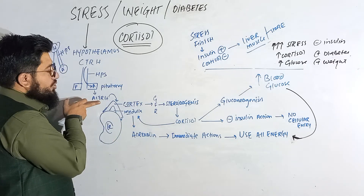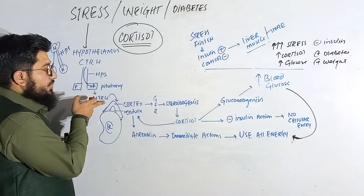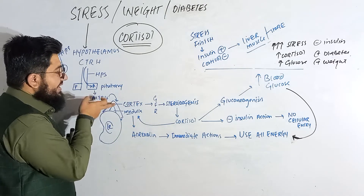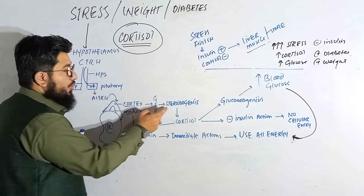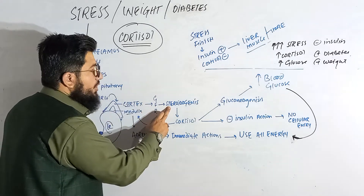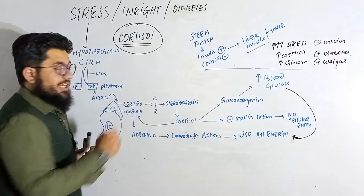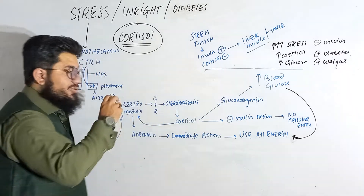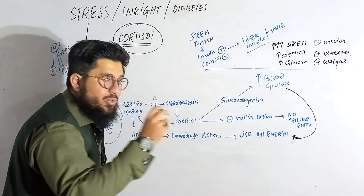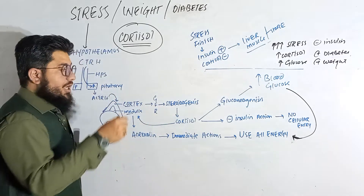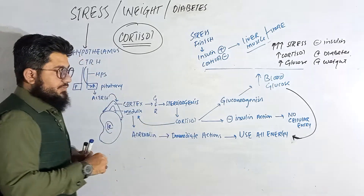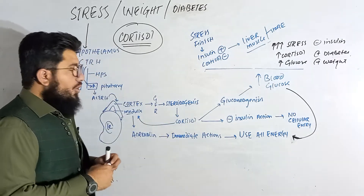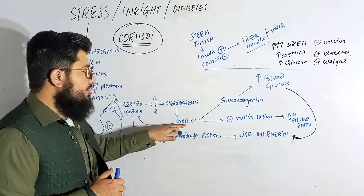ACTH targets the zona fasciculata of the adrenal cortex, where steroidogenesis takes place. Several steroids are synthesized here, and one of those is cortisol.